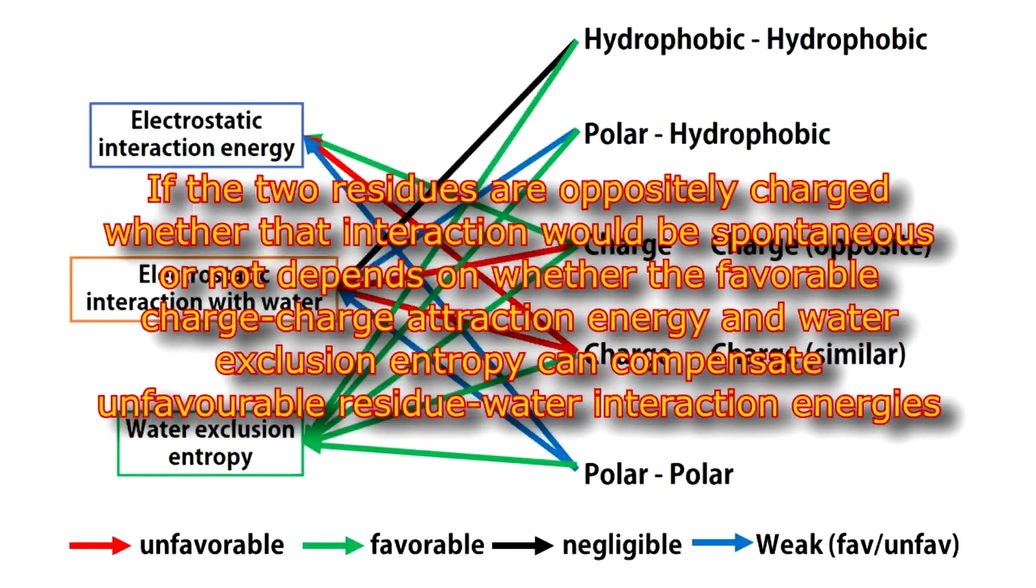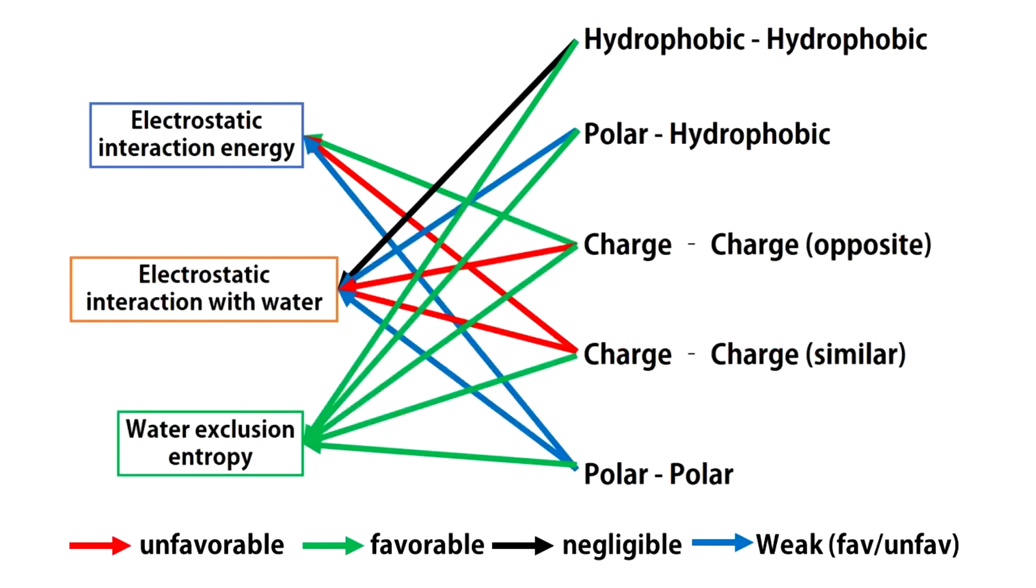If the two residues are oppositely charged then whether the interaction would be spontaneous or not depends on whether the favorable charge-charge attraction energy and water exclusion entropy can compensate the unfavorable residue-water interaction energies. So interaction between two opposite charges may or may not be spontaneous. As you may have guessed, interaction between two similar charges is never spontaneous. Same goes for polar residues. Polar-polar interactions are generally not spontaneous.